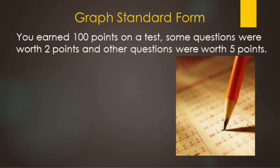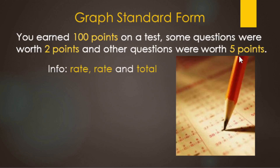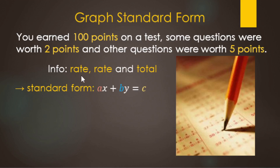In this video, we're going to be going over graphing in standard form. Here's a scenario: you earned 100 points on a test. Some of the questions were worth 2 points, other questions were 5 points. The information we have is a rate, a rate, and a total. Whenever you have information similar to that, you're going to be using standard form — that's the AX plus BY equals C form — not slope-intercept form or point-slope form.